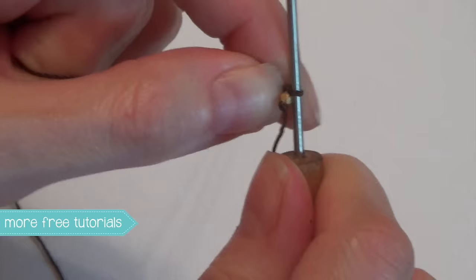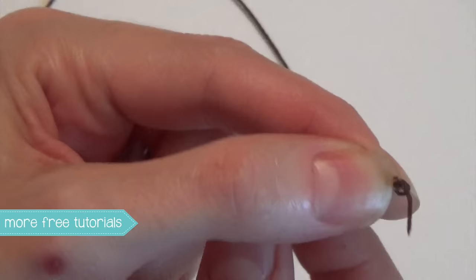kind of push up against that knot as you slide it off the awl. Give it one more little tug, and that knot should be nice and secure right up against your bead.